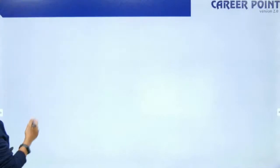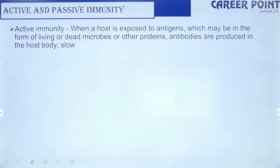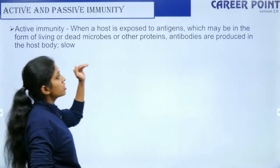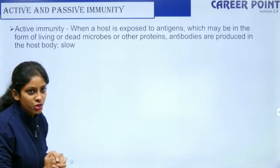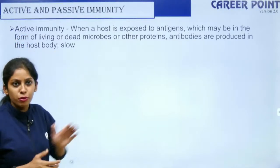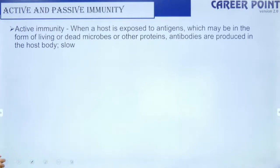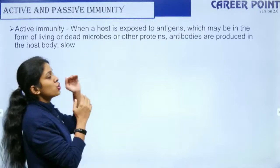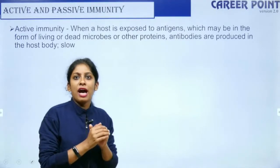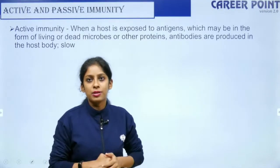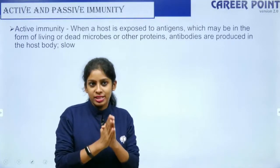Active immunity is when the host body produces antibodies itself. When a microorganism infects our body and our body produces antibodies in response — for example, during a common cold — that is active immunity.